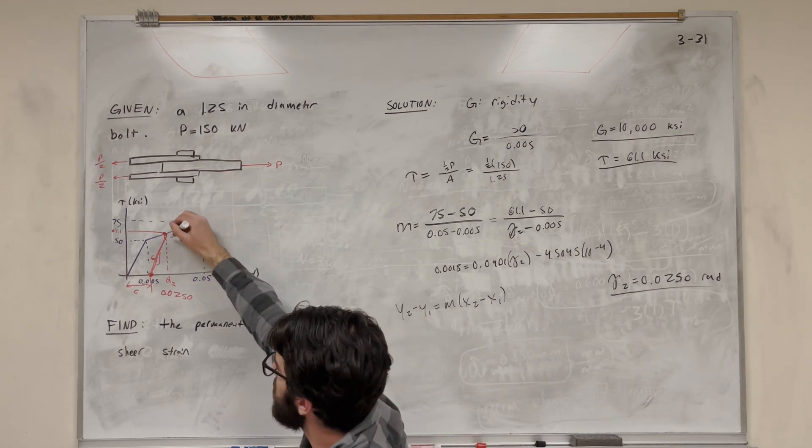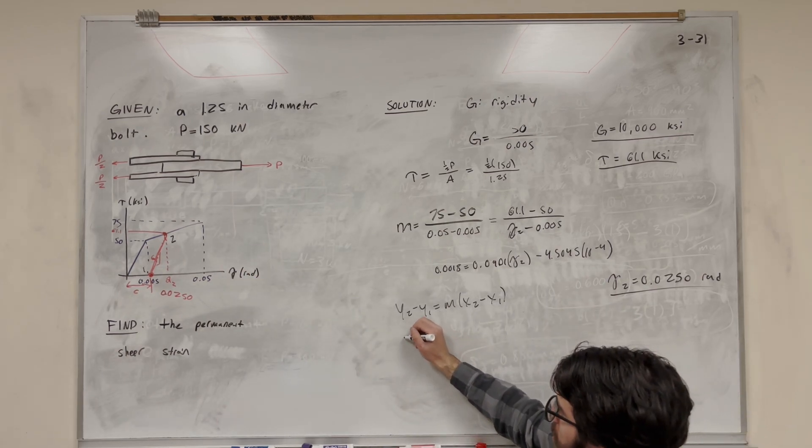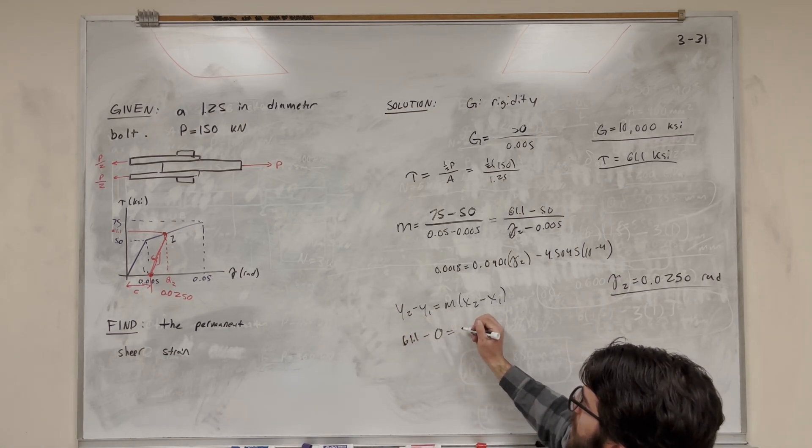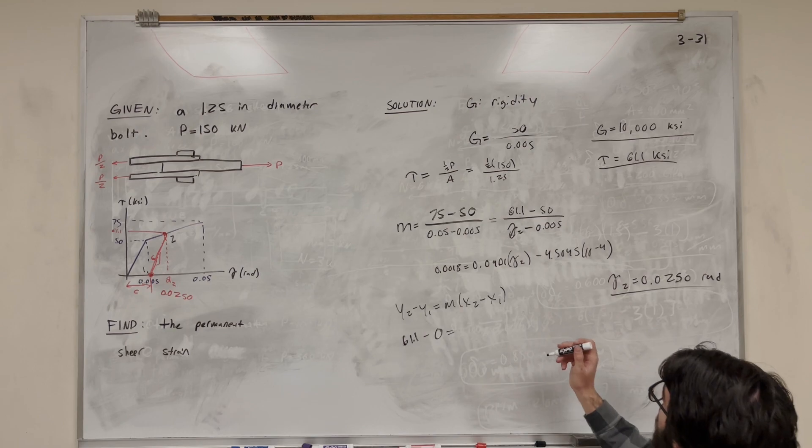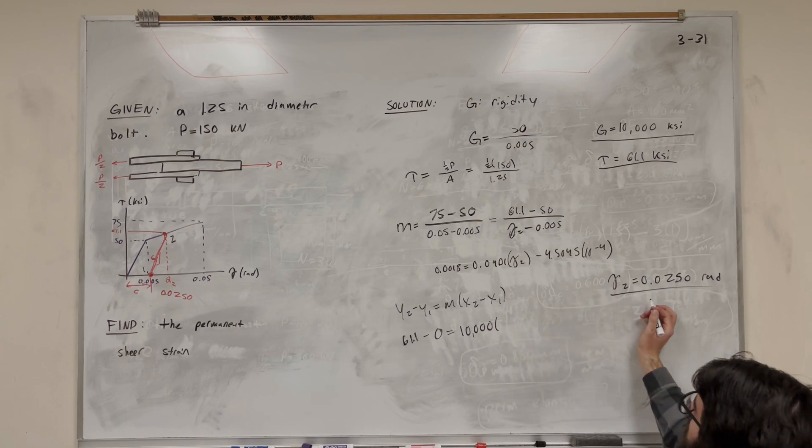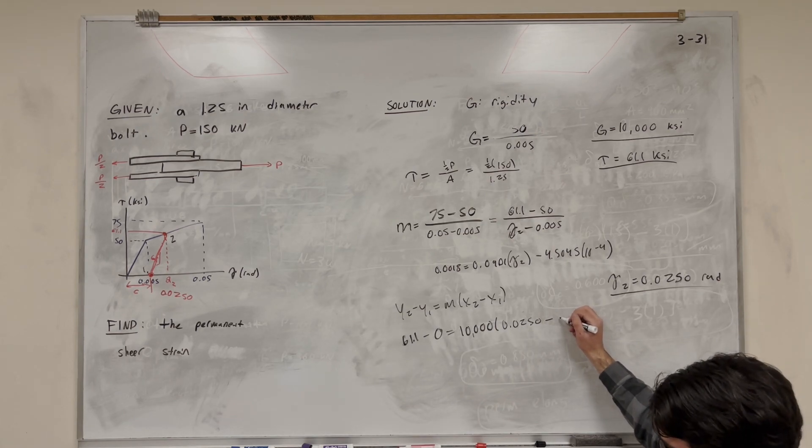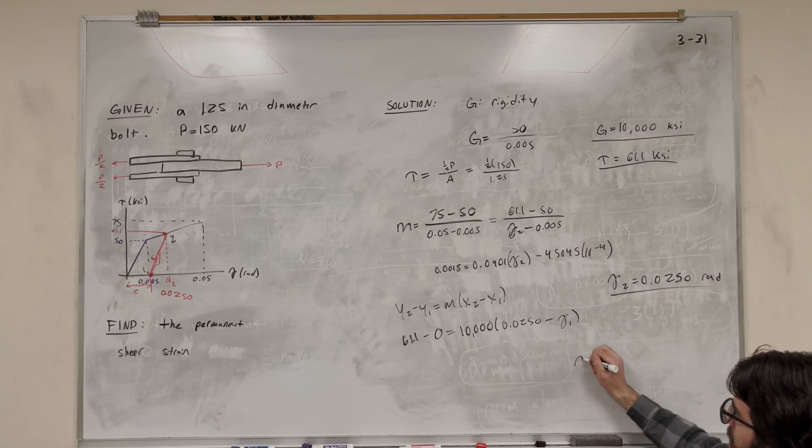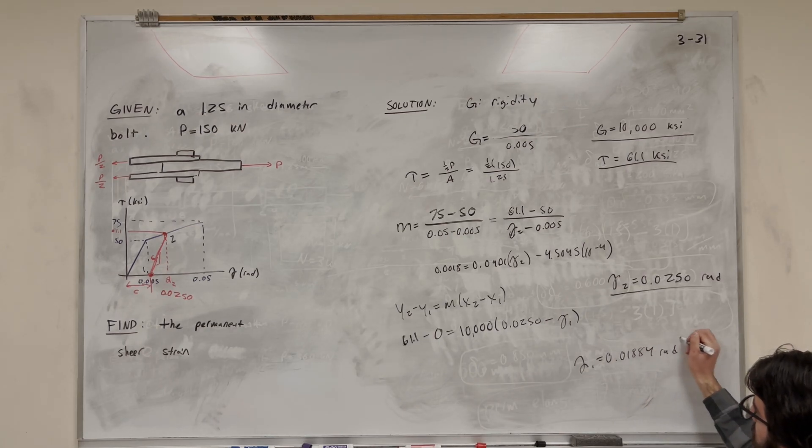Okay, so let's plug in what we know. So y2 is going to be this point. So this is point 2, and this is point 1. We're solving for the x value of point 1. So y2 is going to be that height of 2, so 61.1 minus y1 is going to be 0. So then the slope is going to be G that we found earlier, because we're going down at the slope of G, which we found to be the slope of that line. That's going to be 10,000. x2 is going to be that value we just solved for, so 0.0250 minus x1, which is what we're solving for. We can just call that strain 1. So now if you solve this equation, you get the strain of 1 is equal to 0.01884 radians. And that's our final answer.